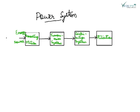This is the block diagram of the electrical power system. Here, there is the energy source — the input to this system is the energy source, and it can be of any type. Then comes the generating station, where generation can be done using hydro, thermal, or nuclear.